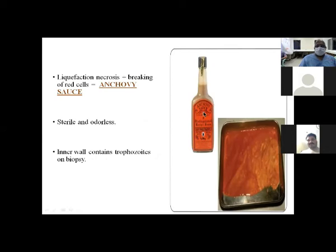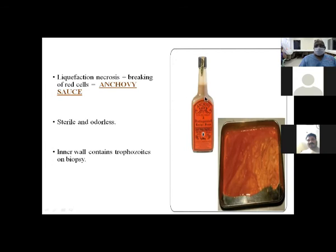Amoebic liver abscess pus is odorless — classically described as 'anchovy sauce' colored — whereas pyogenic liver abscess pus has an odor because it contains organisms like E. coli and Klebsiella. An amoebic abscess can become foul-smelling if secondarily infected by circulating bacteria, at which point the color changes to creamy pus. The inner wall contains trophozoites — careful scraping of the inner wall and sending for examination can demonstrate amoebic trophozoites.